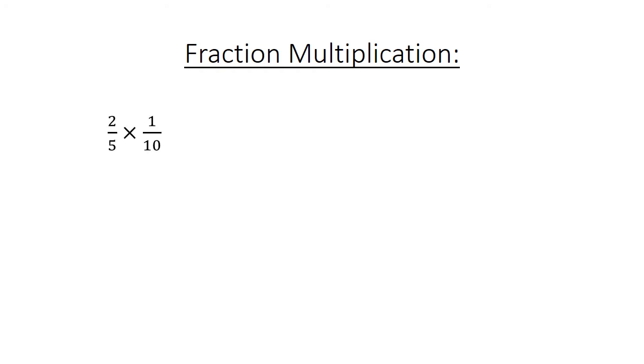Fraction multiplication: 2 over 5 times 1 over 10 equals 2 over 50, which equals 1 over 25.